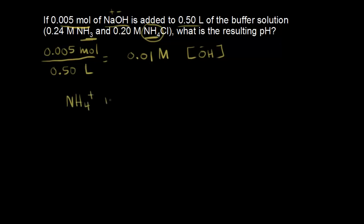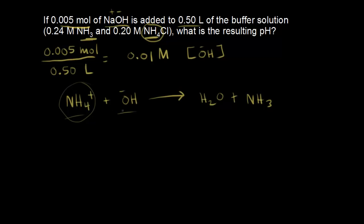Let's write out the buffer reaction. NH4+ is going to react with hydroxide, and this goes to completion. If NH4+ donates a proton to OH⁻, the OH⁻ turns into H2O — so we make water. And if NH4+ donates a proton, we're left with NH3, ammonia. Now let's think about our concentrations: we have 0.01 M hydroxide, 0.20 M ammonium, and 0.24 M ammonia.